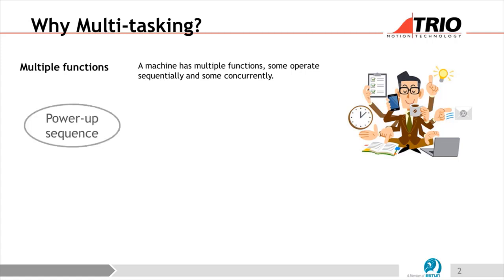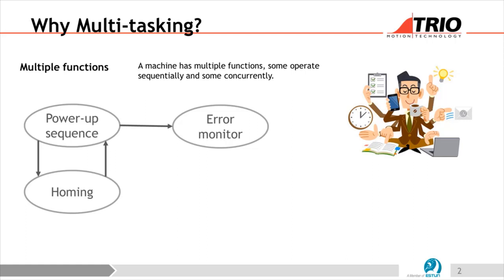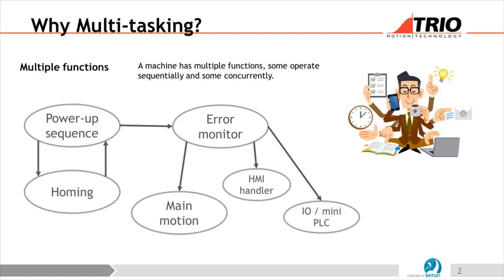Typically we might have a power-up sequence involving a startup program. After power up on a typical machine, you might want to home the axes, because a lot of times — especially with incremental encoders — on power up you don't know where they are, so you have to find a known position. We'd probably want something monitoring any errors, either reporting them, flashing a light, stopping the machine, or trying to correct it. Then the main parts of the machine itself could be split up — the main motion part, HMI handling, a mini PLC handling IO. There are lots of opportunities for doing things in parallel.